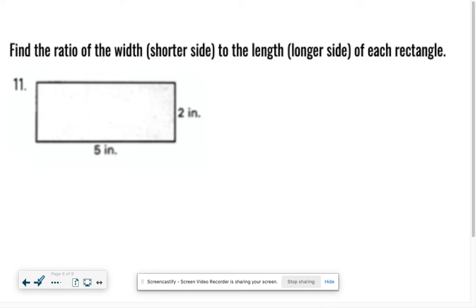Number 11. Find the ratio of the width, the shorter side, and the length, the longer side of each rectangle. So don't overcomplicate this. We're just writing the ratio, a number over a number. They want the shorter side on top. What's our shorter side here? Two. And our longer side, the length, is five. So our ratio is 2 to 5. That's all. That's it.